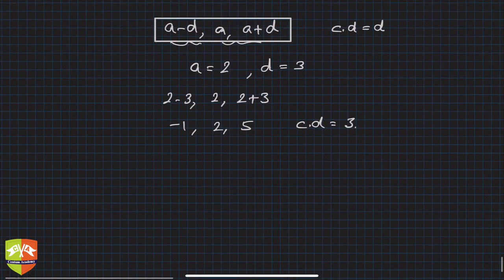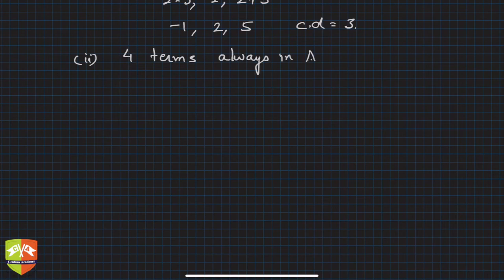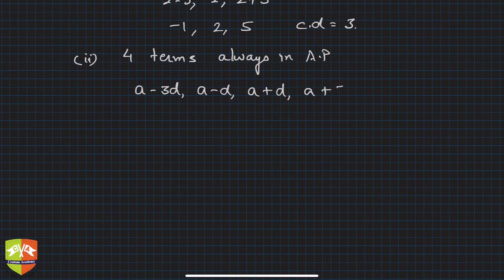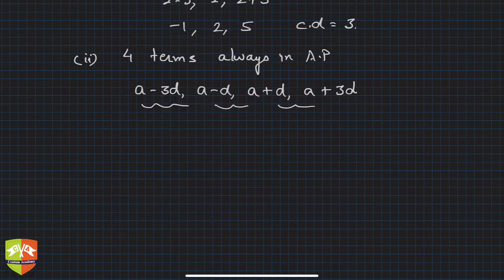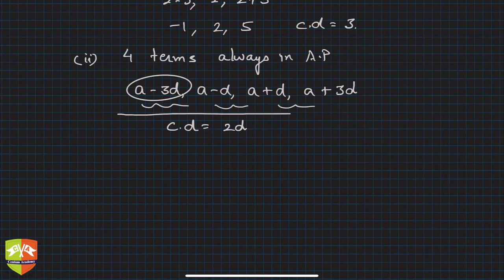What if there are four terms in AP? Four terms always in AP can be written as a minus 3d, a minus d, a plus d, and a plus 3d. If you look at them carefully, the common difference is 2d. So they are very much in AP with common difference 2d. You can treat this as the first term with common difference 2d, and any AP of four terms can be written in this form.